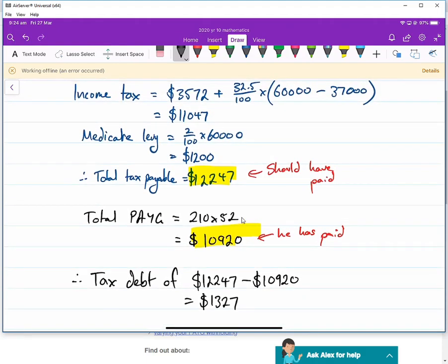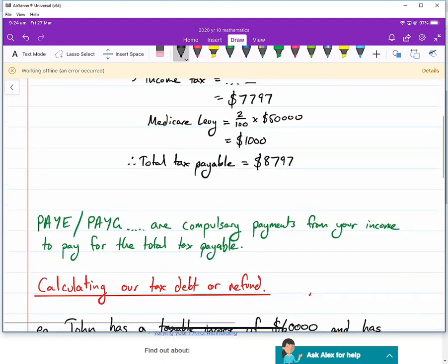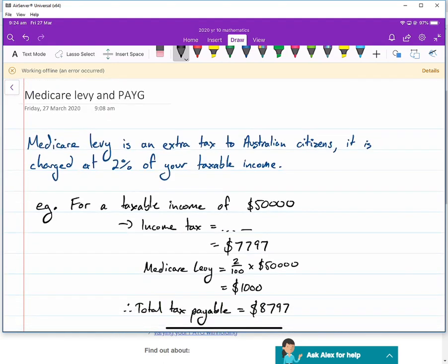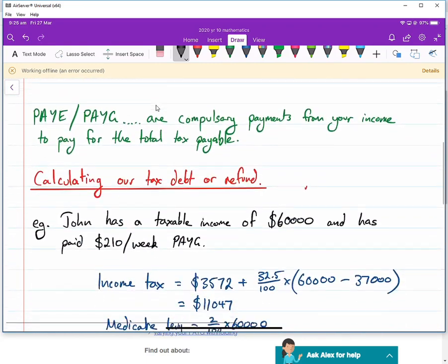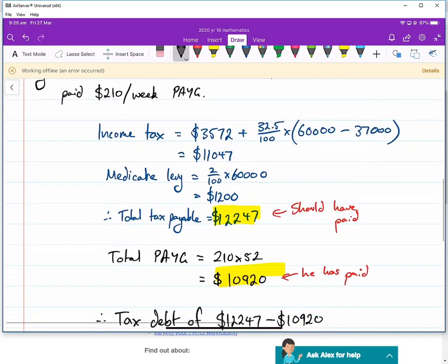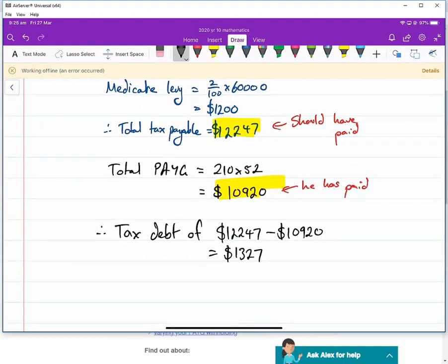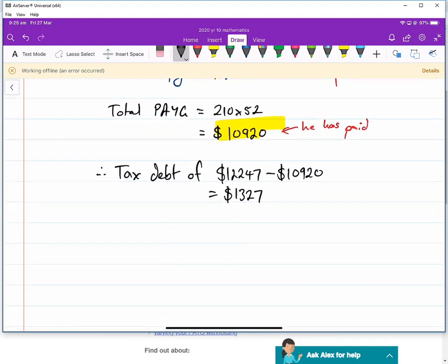So that's what we wanted to talk about today, which is Medicare levy and PAYG, and then using that to find our tax debt and tax refund. I hope this is clear. Please have a go yourself with working these out. And if you have any questions, please ask.